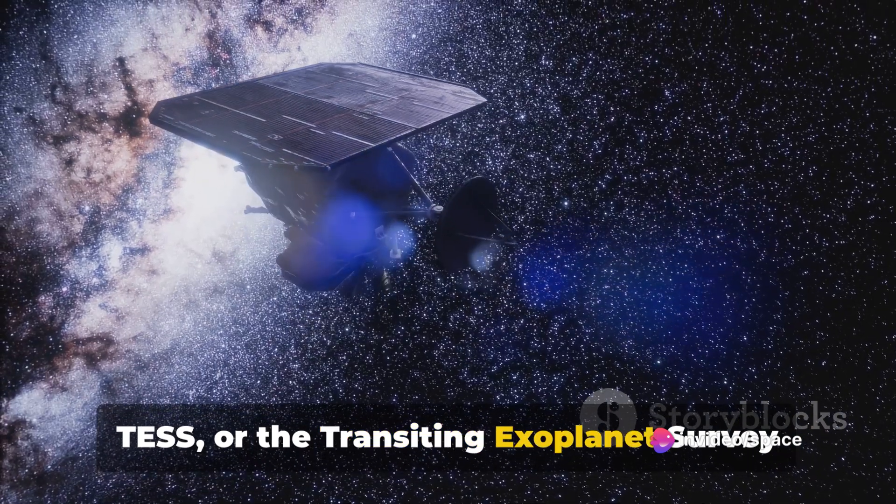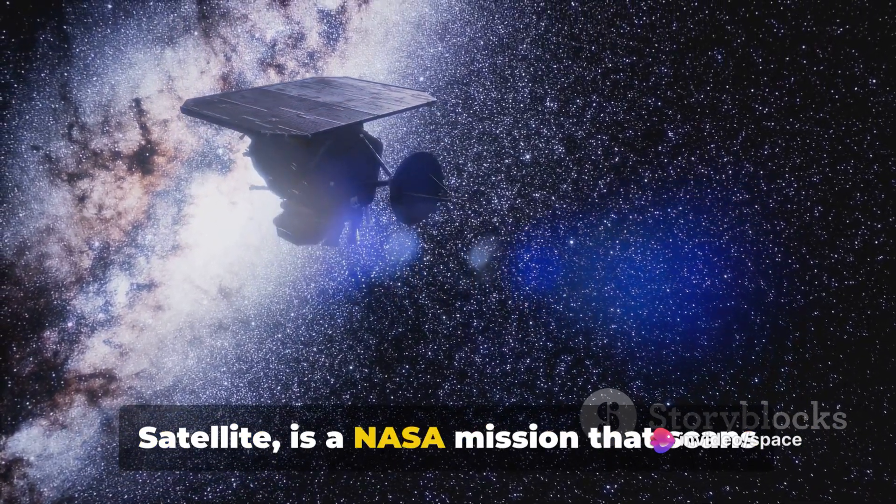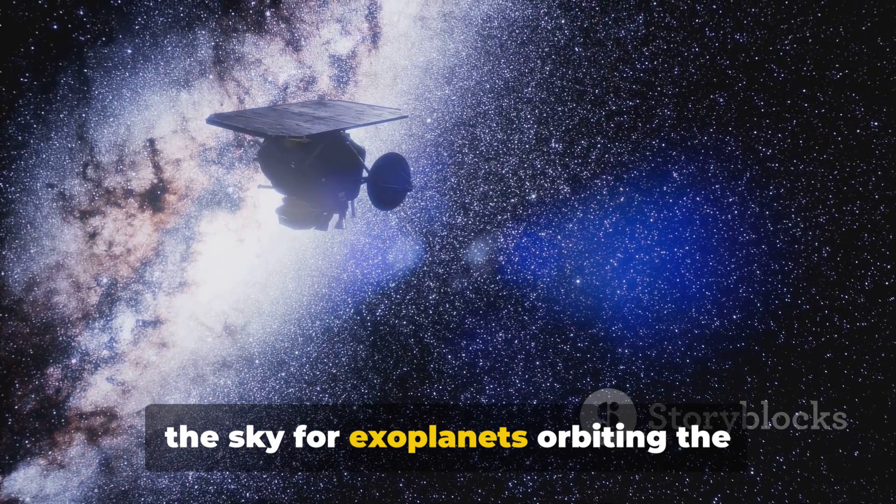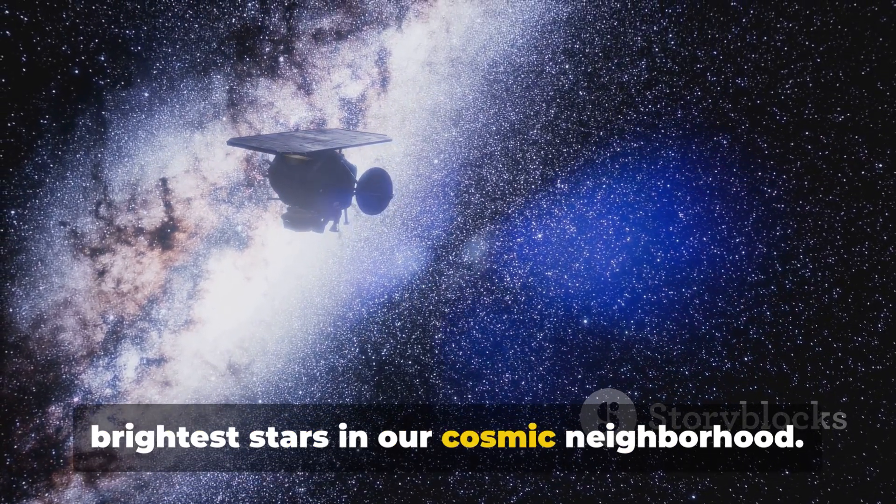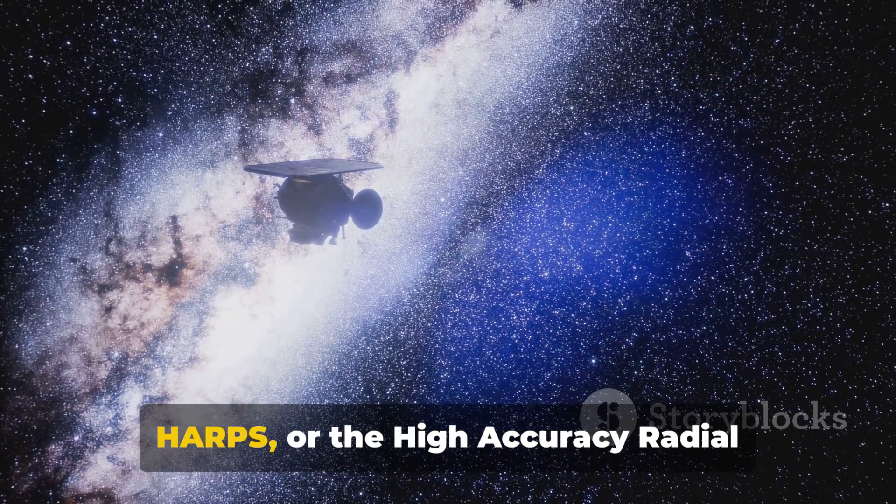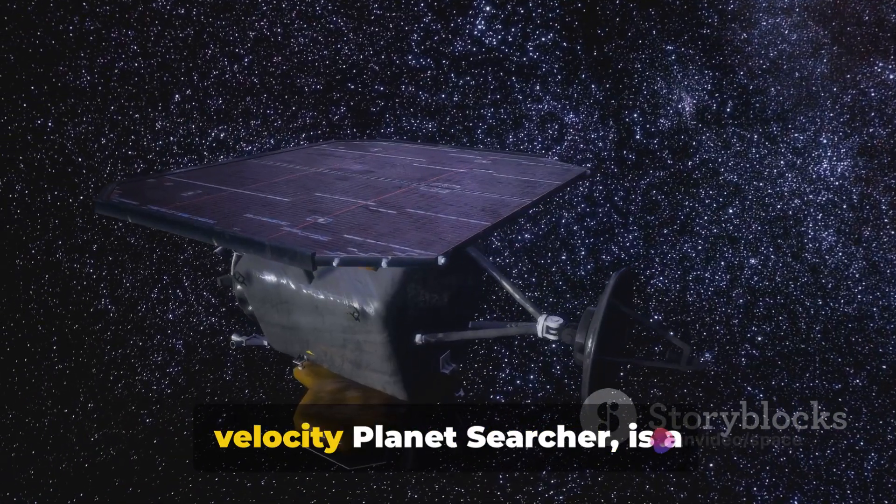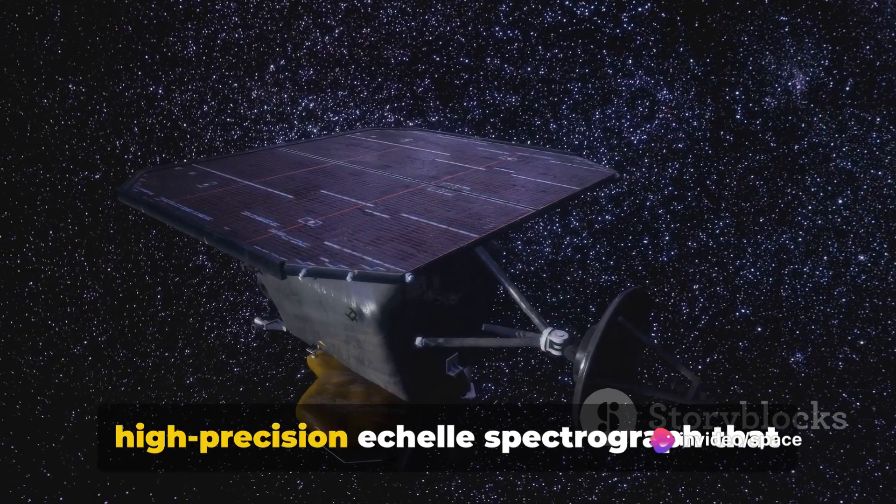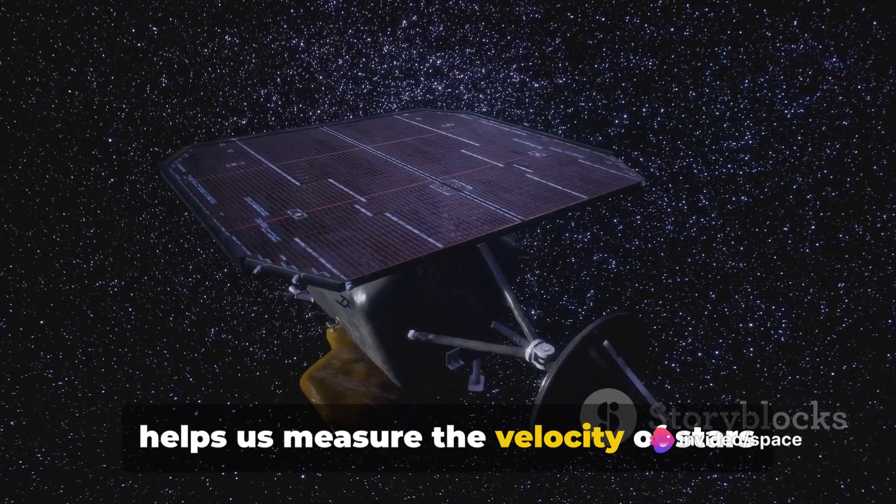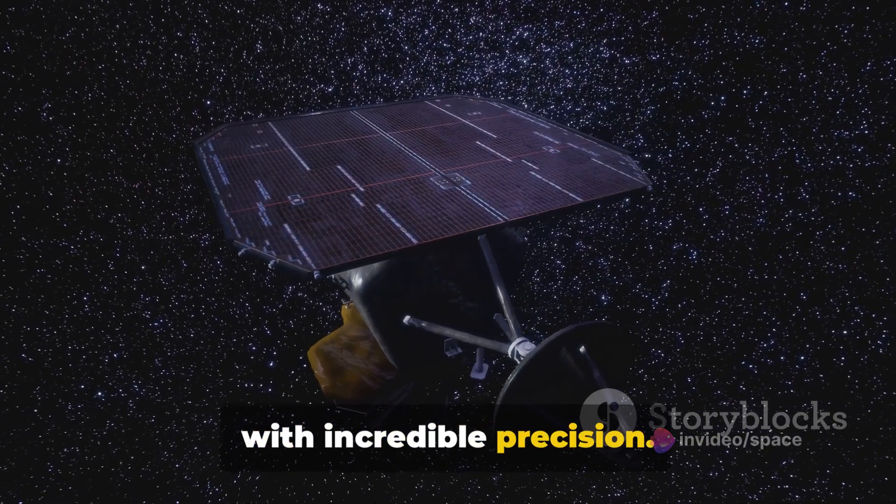TESS, or the Transiting Exoplanet Survey Satellite, is a NASA mission that scans the sky for exoplanets orbiting the brightest stars in our cosmic neighborhood. HARPS, or the High Accuracy Radial Velocity Planet Searcher, is a high-precision Echelle spectrograph that helps us measure the velocity of stars with incredible precision.